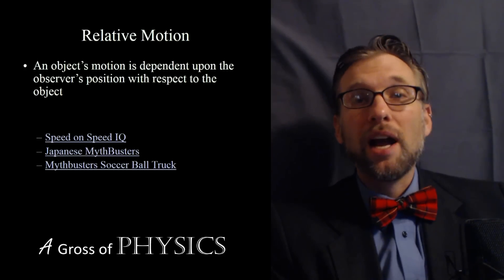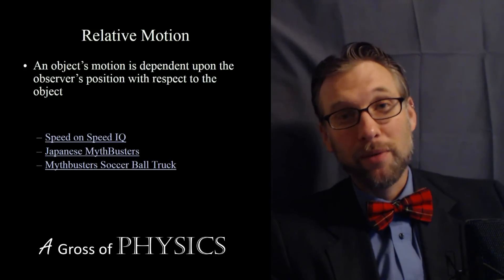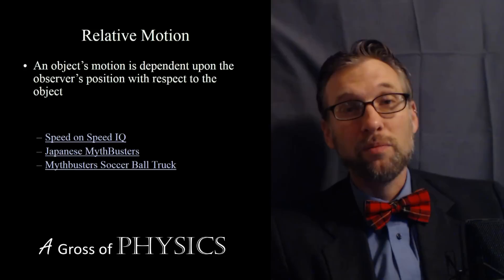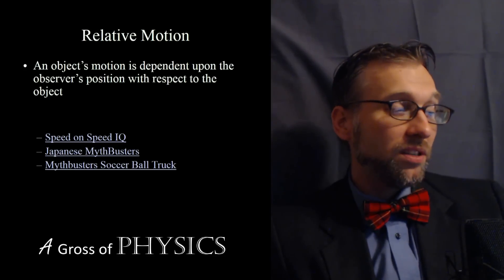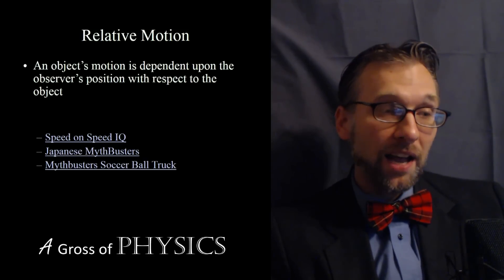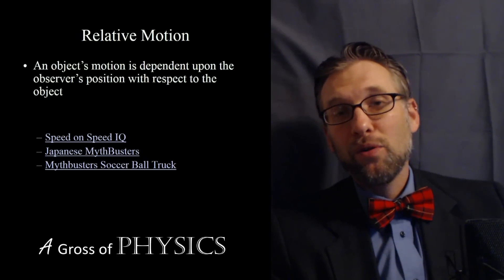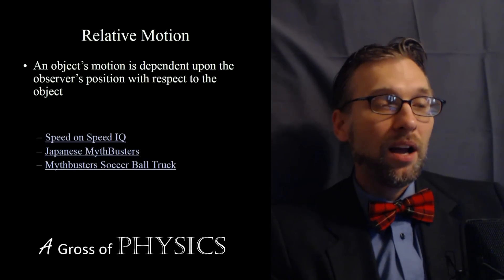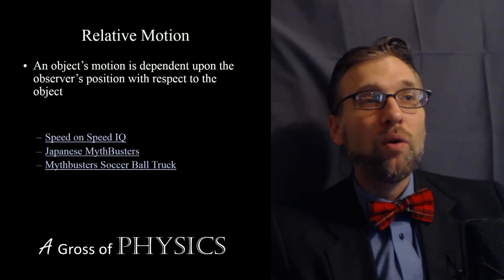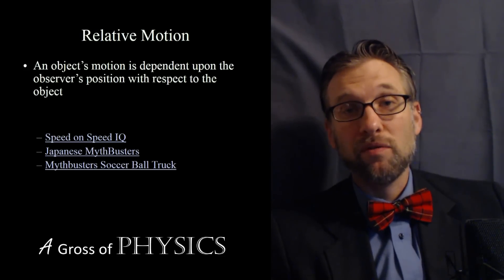The first topic within the description of motion is relative motion — and no, I'm not talking about my brother walking down the street. Instead, we're talking about an object's motion with respect to another object from a certain point of view. An object's motion is dependent upon the observer's position with respect to the object. The beautiful part about relative motion is that one event can have different people observe it differently, and each person's observation can be correct.